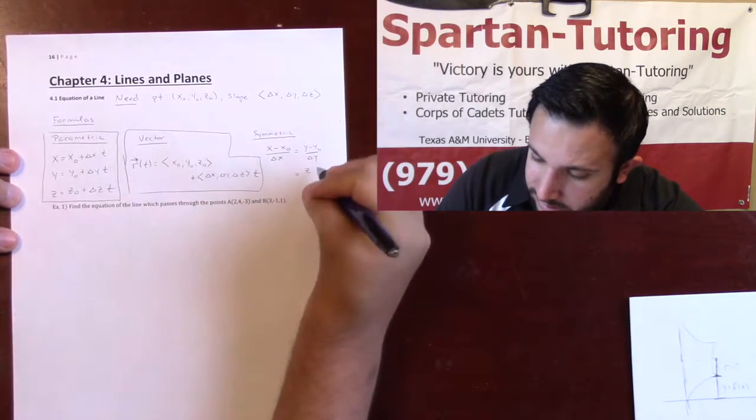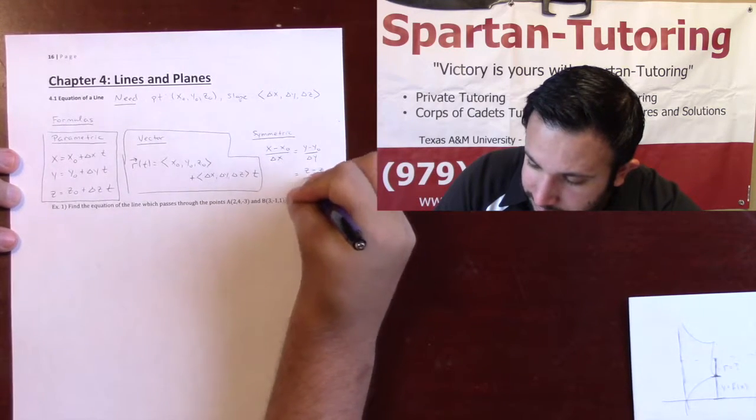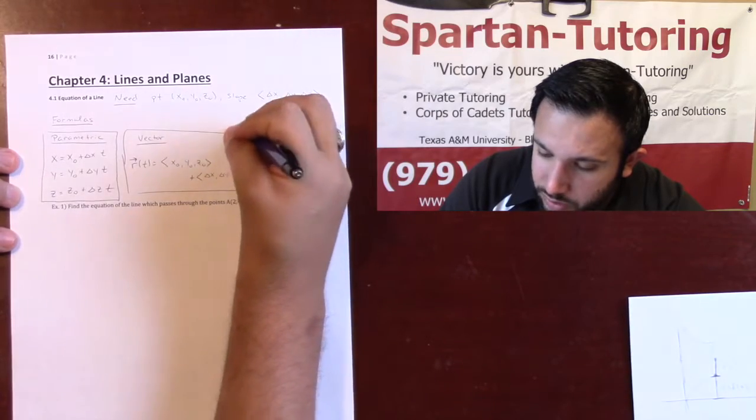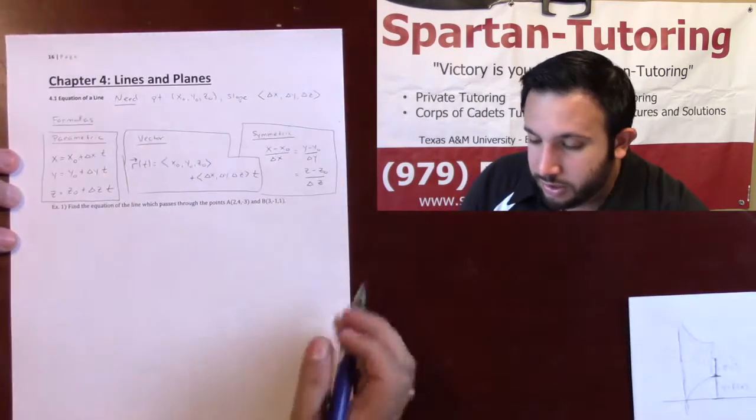equals z minus z-naught over delta z. And this is what it would look like if they wanted it as a symmetric equation.